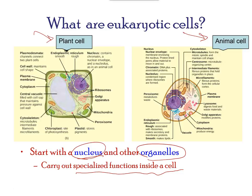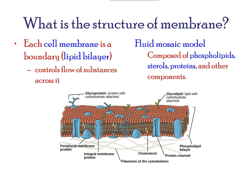Organelles allow for various functions to occur in the cell at the same time. Before discussing the functions of organelles within a eukaryotic cell, let us first examine two important components of the cell: the plasma membrane and the cytoplasm.